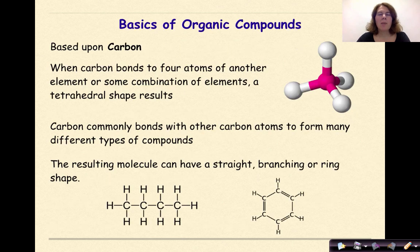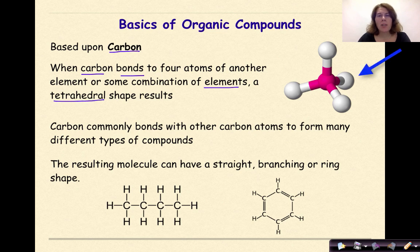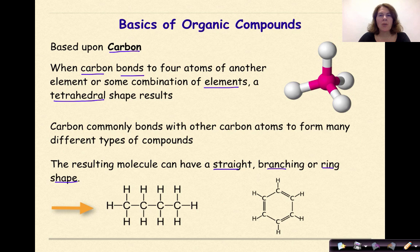Let's start off by talking about the basics of organic compounds. Organic chemistry is based upon the element carbon. When carbon bonds to four atoms of another element, or some combination of elements, a tetrahedral shape results, as you can see in the image on my screen. Carbon commonly bonds with other carbon atoms to form many different types of compounds. The resulting molecules can have a straight, branching, or ring shape associated with them, as you can see in the diagram down here, which is a straight-chained hydrocarbon, or the other structure that is in the form of a ring.